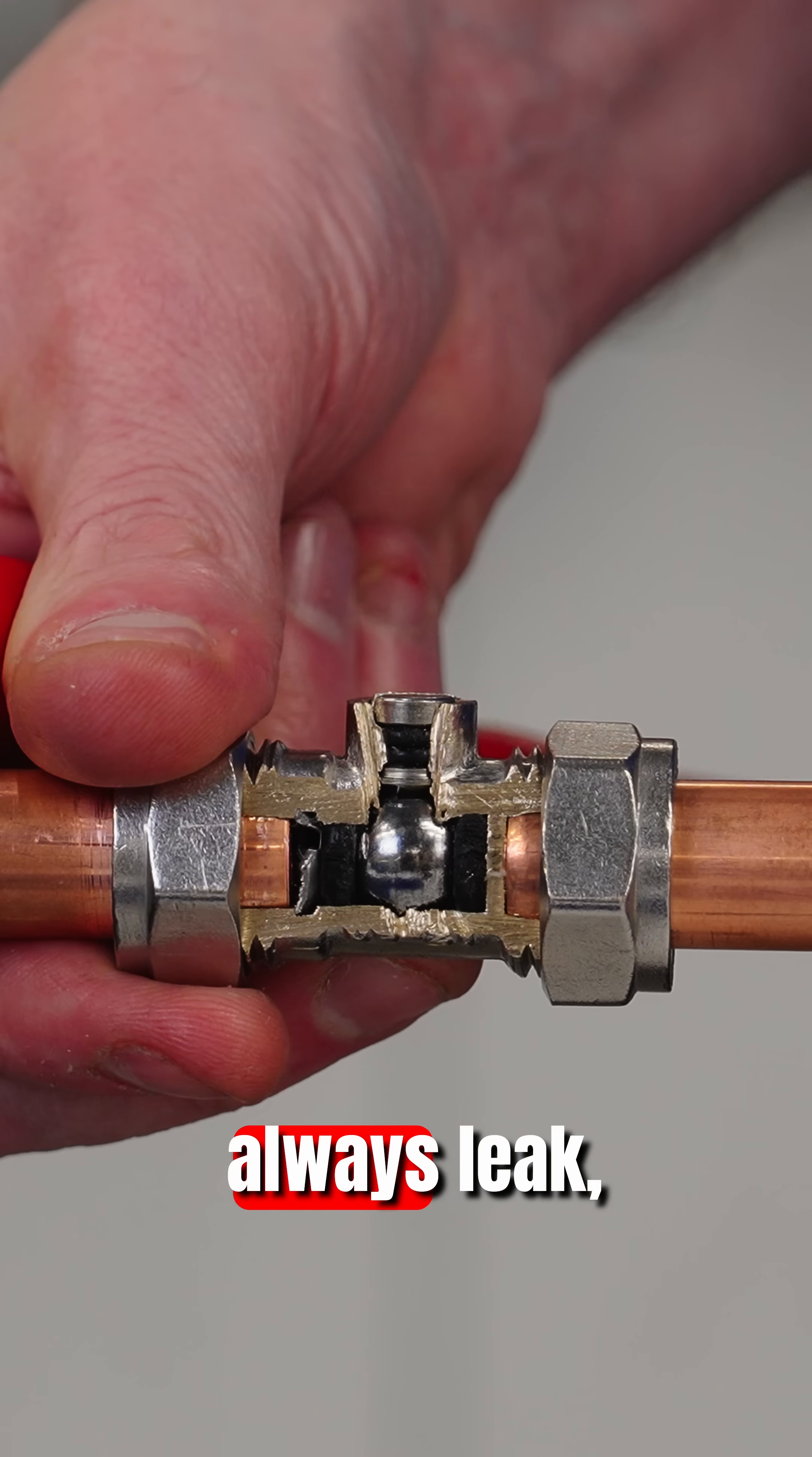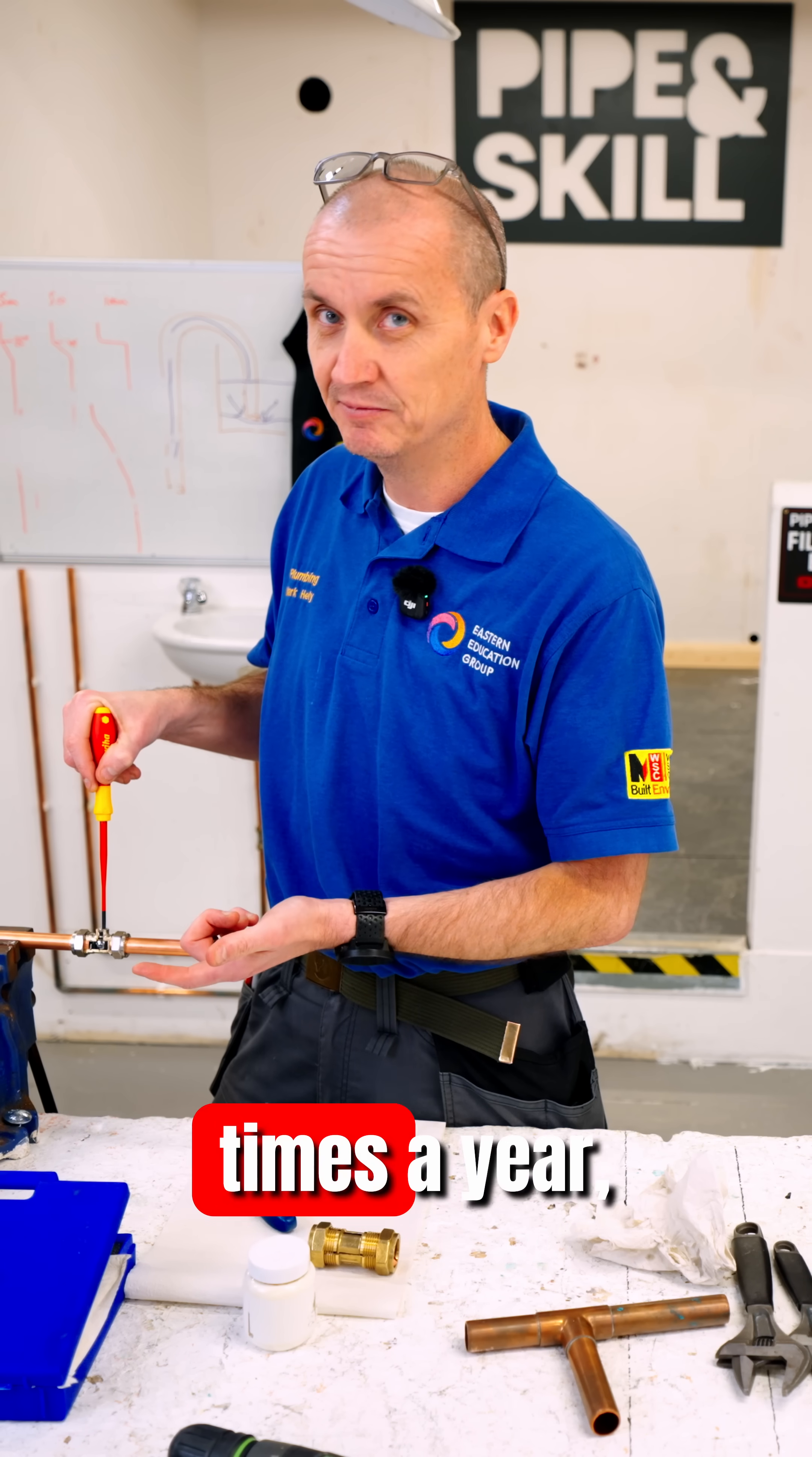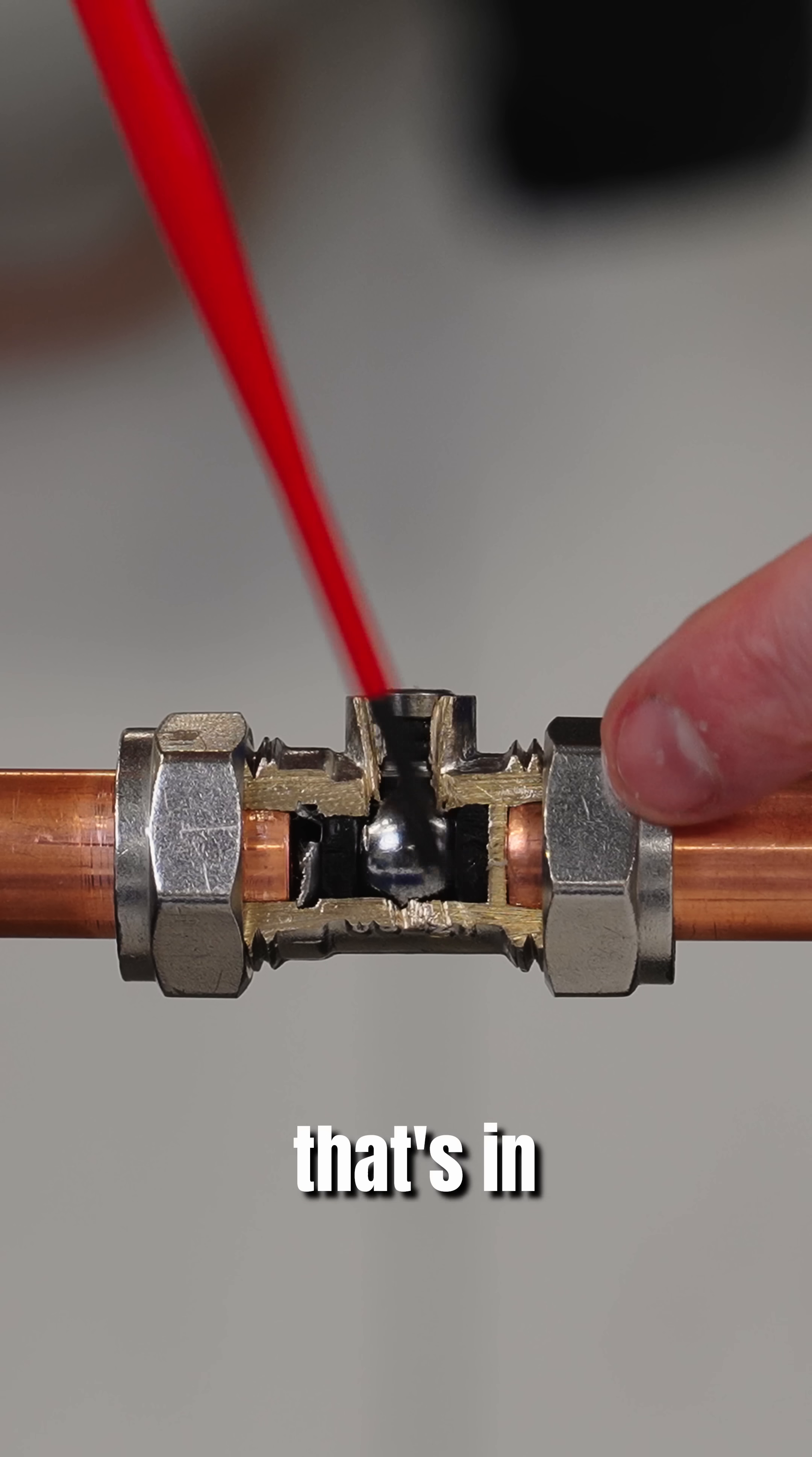Now where we think the leak comes from, because they always leak, is there's two washers you can see up here. Even though this valve gets used a couple of times a year maybe, if that, I think these washers either perish or they dry up. That lets the water that's in this pipe here, that's passing through...